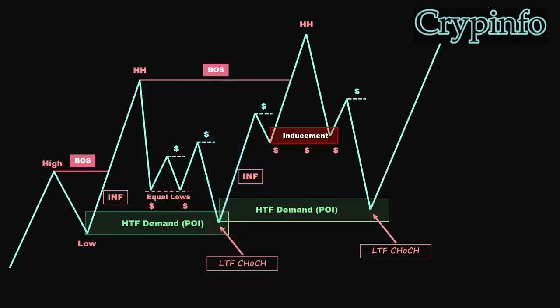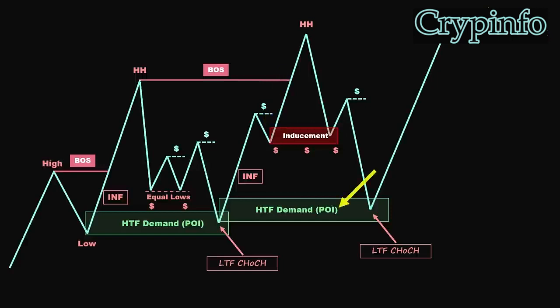We can see that price, after reaching our point of interest and mitigating it, reversed to the upside, leaving a significant inefficiency behind, and also created an internal high accompanied by a small pullback followed by a sharp upward move that resulted in a break of structure. As a result, we now have another break of structure to the upside and a demand zone associated with it. It is worth noting that there is another unmitigated zone near the break of structure that can confuse traders — for us, this order block represents an inducement level.